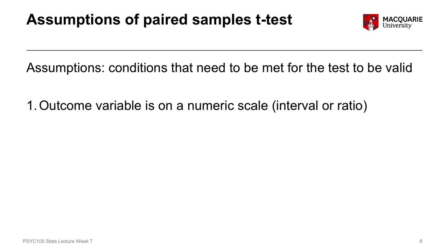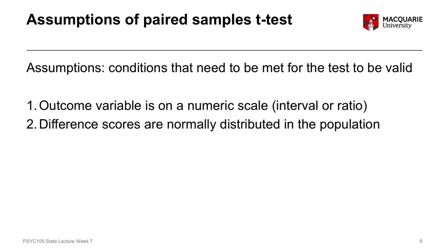There are three assumptions for our paired samples t-test. The first is that our outcome variable — our dependent variable — is on some kind of numeric scale, either interval or ratio. The second assumption is that the difference scores are normally distributed. This is not an assumption about the normal distribution of the dependent variable itself, but rather of the difference between score 1 and score 2 — we'll talk about that in more detail shortly.